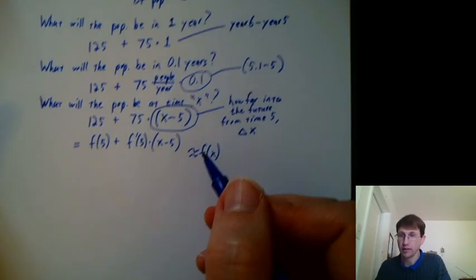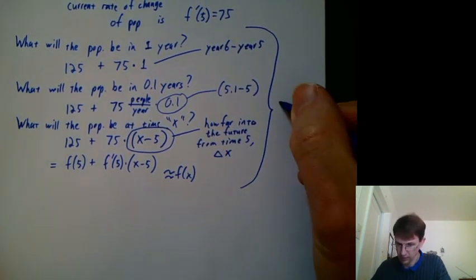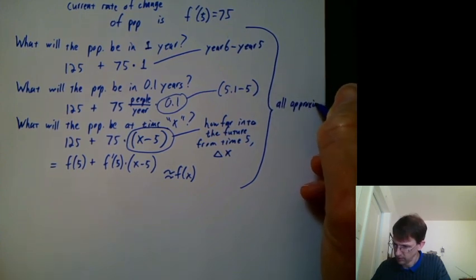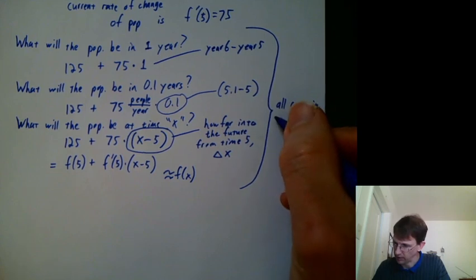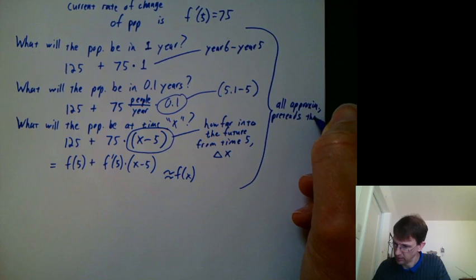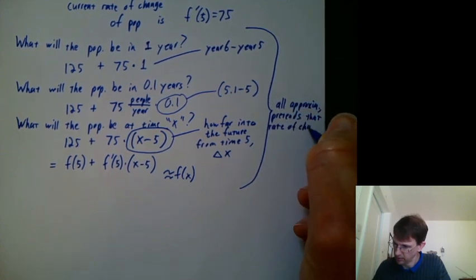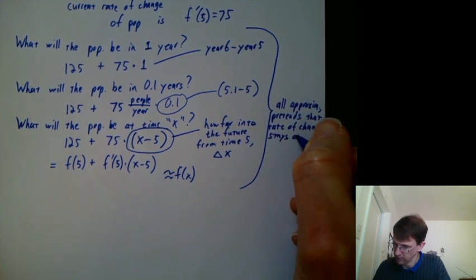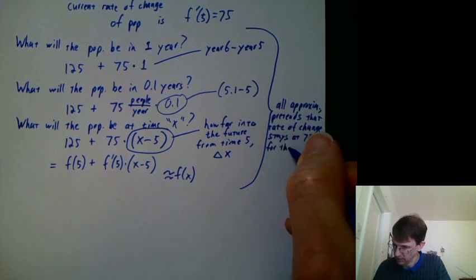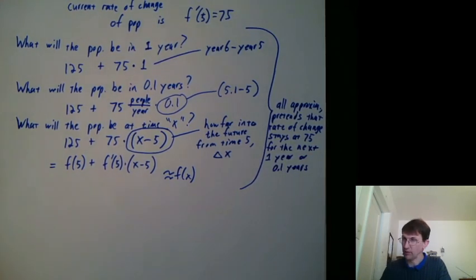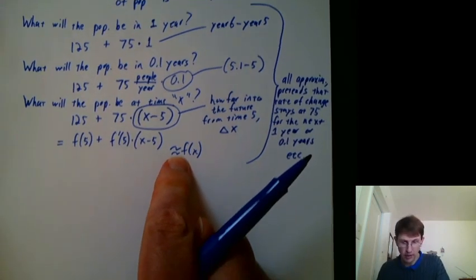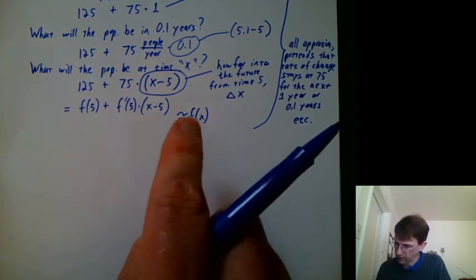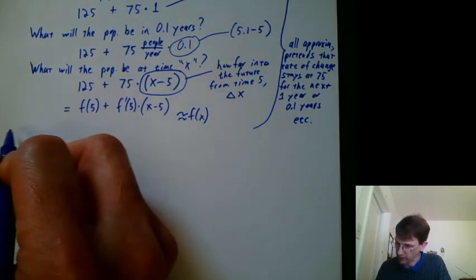But we would look back at all this and say that all this is approximate because we're pretending that the rate of change stays at 75 exactly for all one year or a tenth of a year. But it probably doesn't do that. Because if f of x is x cubed, we know that's growing faster and faster. So we hope it's approximately equal. And we'll see later how good it is. So this is altogether a way of approximating f of x using information at time 5.